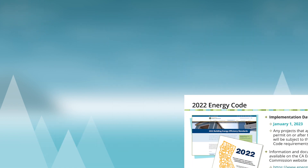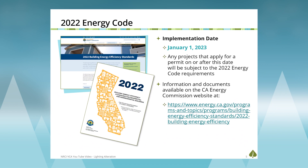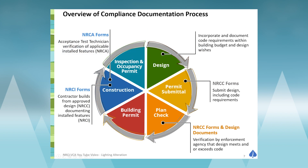These requirements apply for projects subject to the 2022 Code Cycle, which applies for projects that apply for permit as of January 1st of 2023. If they applied for permit previous to January 1st of 2023, they would be subject to the 2019 Code Cycle.